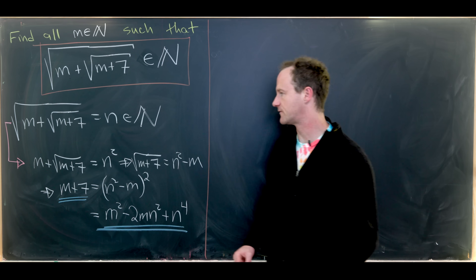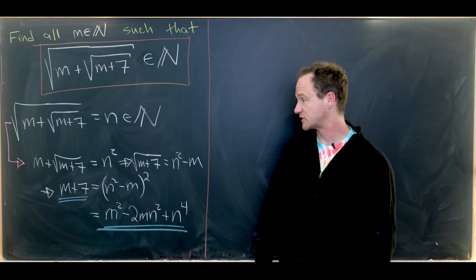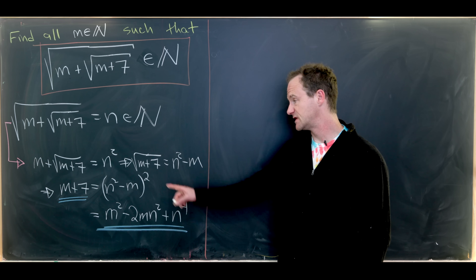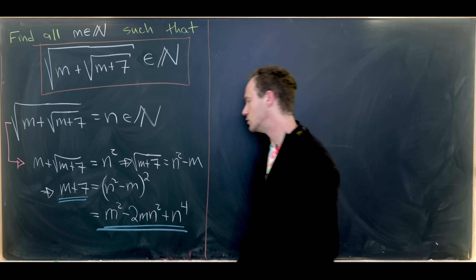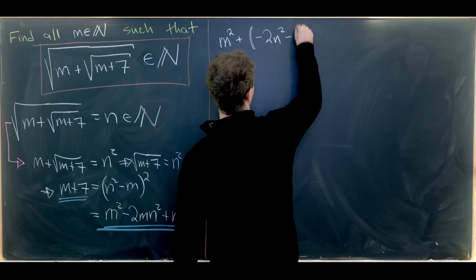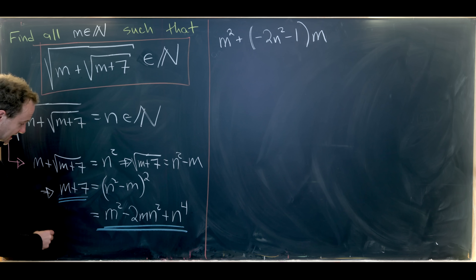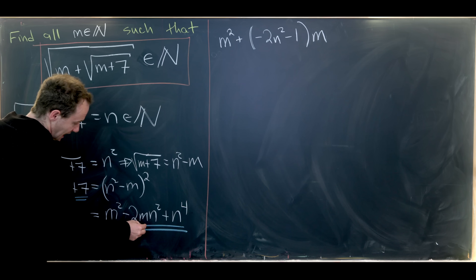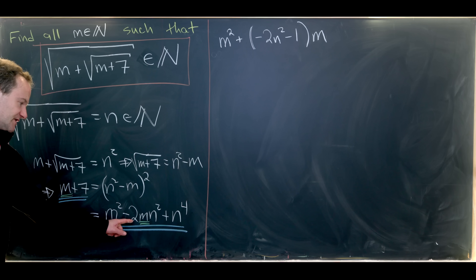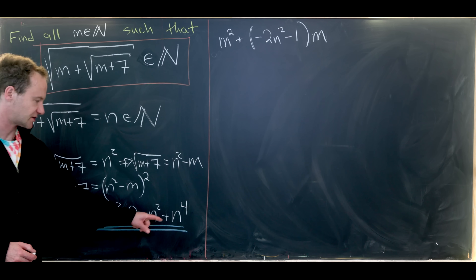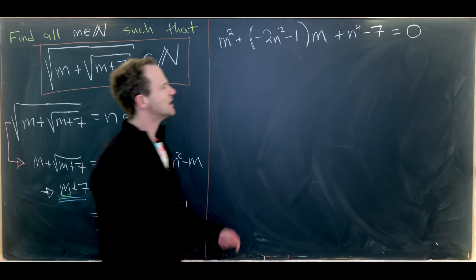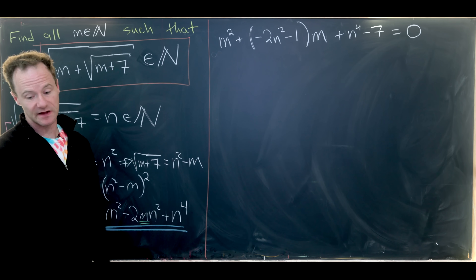Instead of having this solved for n, which has this nested root, we will solve it for m, which will not have a nested root — because if we view m as the variable, this is just a quadratic equation. Keeping that in mind, let's write this as m squared plus (minus 2n squared minus 1) times m. The coefficient of m is minus 2n squared, and the constant term is n to the fourth minus 7, and we have this equal to 0. We're reorganizing it like this so we can use the quadratic formula.